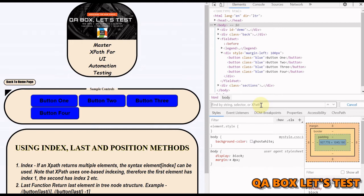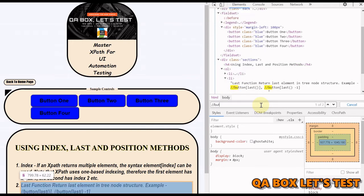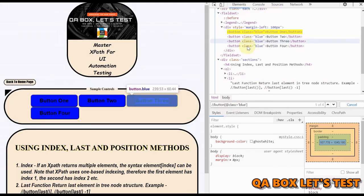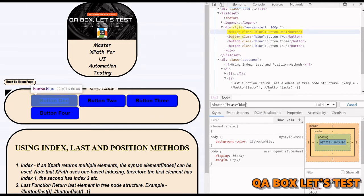Let us start finding out these controls. We are going to say //button, and now we have to provide the class blue. So let us provide class equals blue, and now you can see that I can find these buttons.